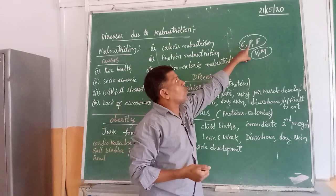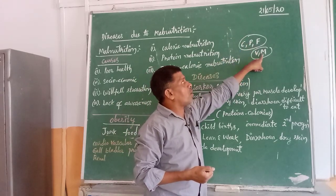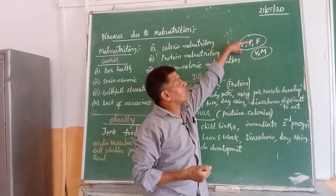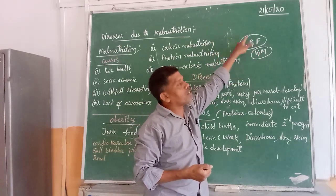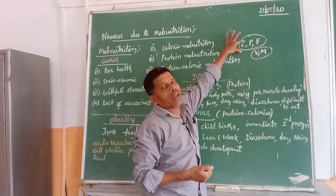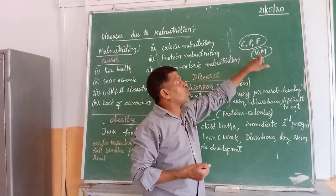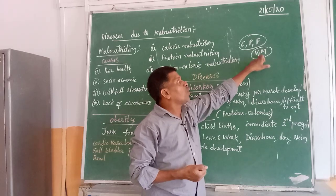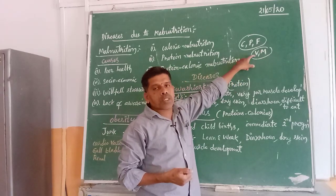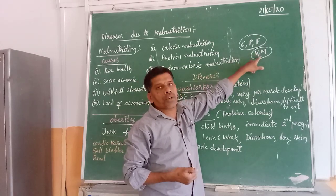Carbohydrates, proteins, and fats are called macronutrients. Vitamins and minerals are called micronutrients. We call carbohydrates, proteins, and fats macronutrients because we take them in large quantities in our day-to-day life. Vitamins and minerals are nutrients which we take in very small quantities, that is why they are called micronutrients.